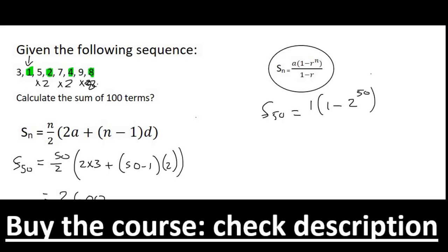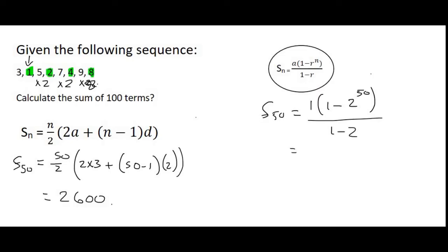And then we'll have 50 terms for that pattern. And then we'll say 1 minus 2 at the bottom. And then you can just put all of that on the calculator. And that'll give us a value of, that actually gives us a huge number.